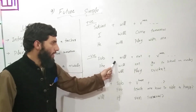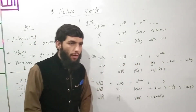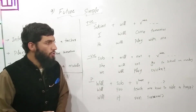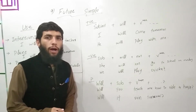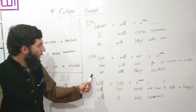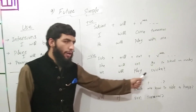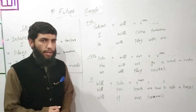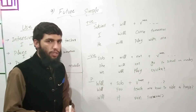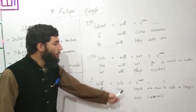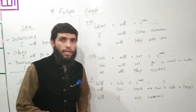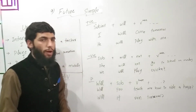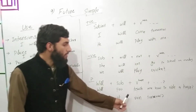The negative structure is: Subject + will + not + verb base form + rest of the sentence. For example: 'She will not go to school on Monday.' The interrogative structure begins with 'will'. For example: 'Will you teach me how to ride a horse?' or 'Will it rain tomorrow?'